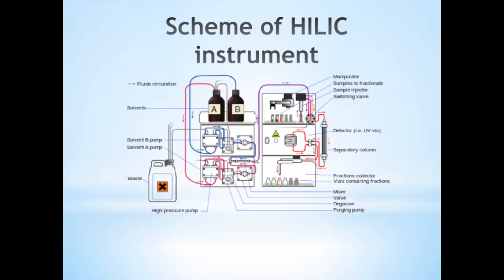The column contains the chromatographic packing material, also known as stationary phase, needed to affect the separation. A detector is needed to see the separated compound bands as they elute from the HILIC column. The mobile phase exits the detector and can be sent to waste or collected as desired.